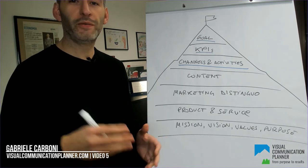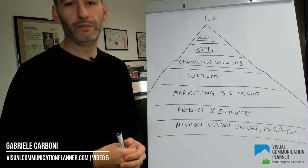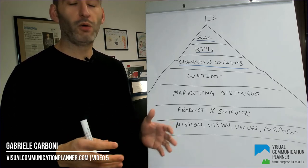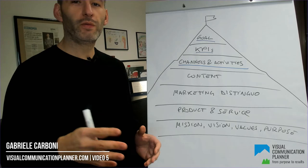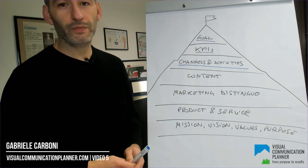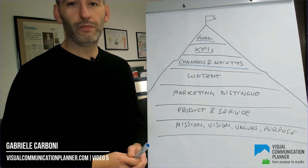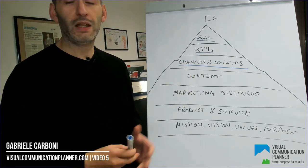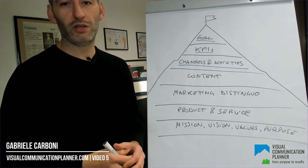Hello and welcome to the fifth training video of the Visual Communication Planner. We are more or less halfway through our marketing summit. You now know that the top of the mountain is the goal of the marketing strategy. A step before, you find the KPIs, then channels and activities. And now it's time for one of the key elements of communication: content.